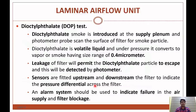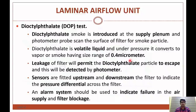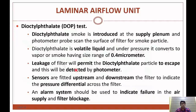For the di-octyl phthalate test, di-octyl phthalate smoke is introduced at the supply plenum and a photometer probe scans the surface of the filter for smoke particles. Di-octyl phthalate is a volatile liquid that under pressure converts to vapour or smoke with a size range of 0.4 micrometer. Leakage in the filter will permit di-octyl phthalate particles to escape, and this will be detected by the photometer. Sensors fitted upstream and downstream of the filter indicate the pressure difference across the filter, and an alarm system indicates failure in air supply or filter blockage.